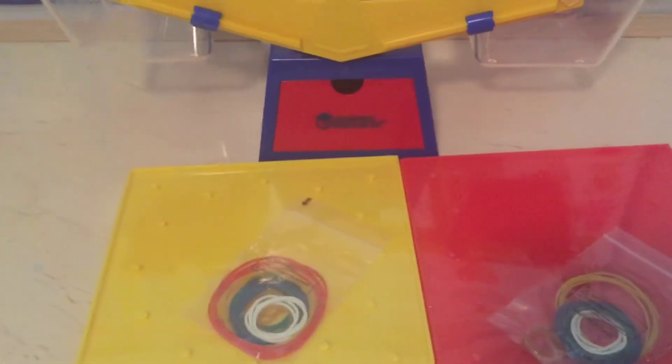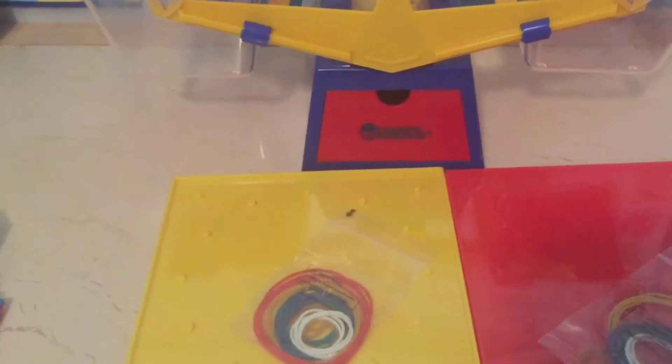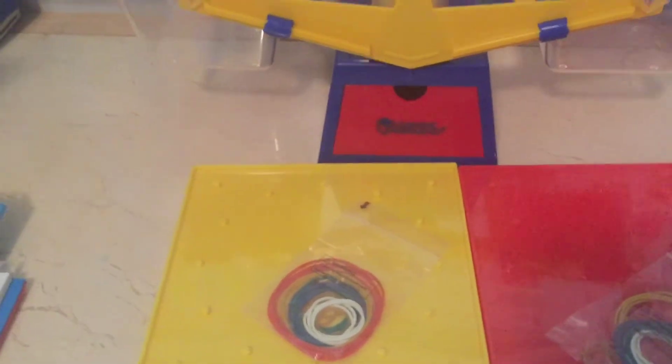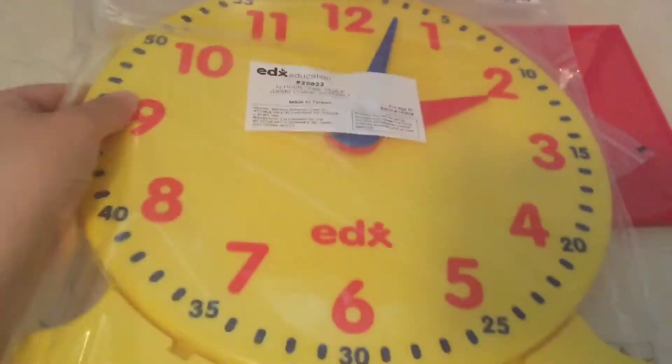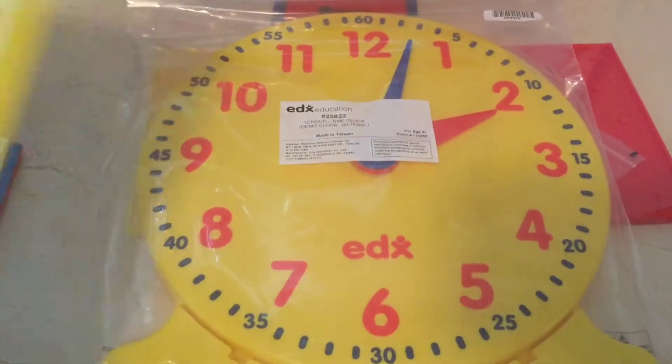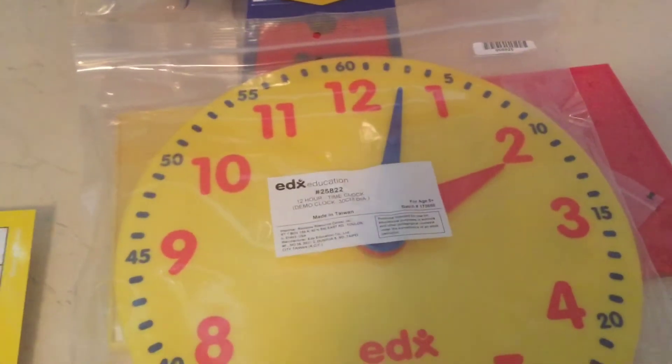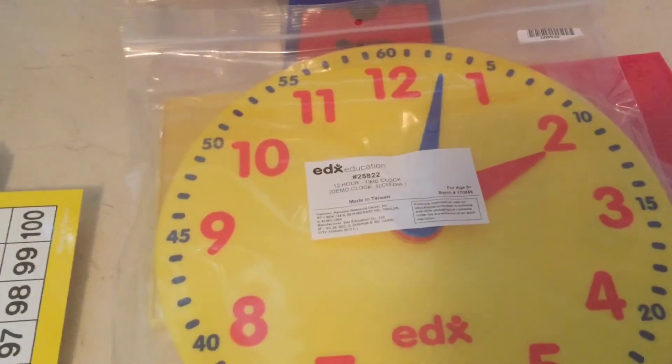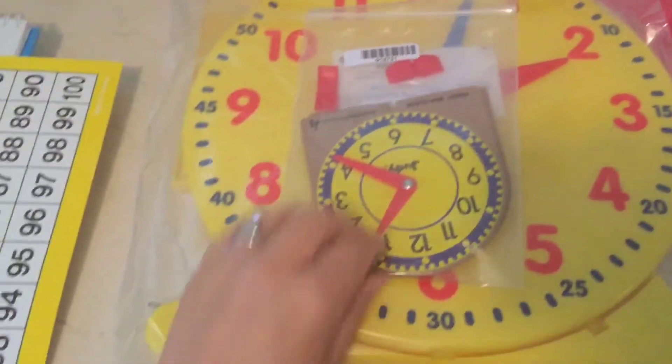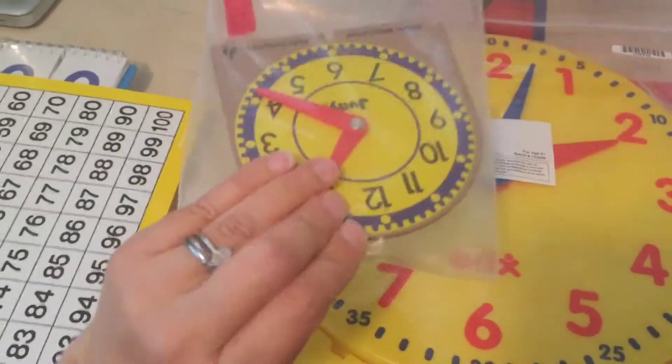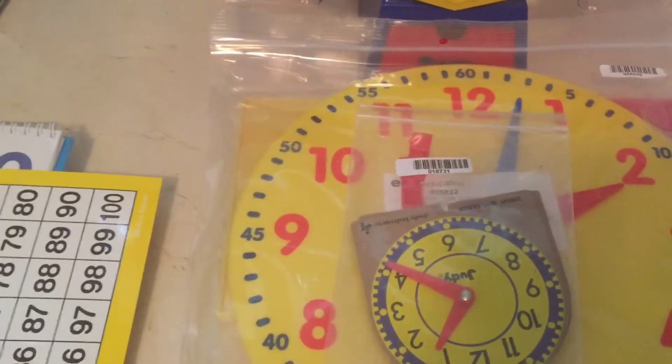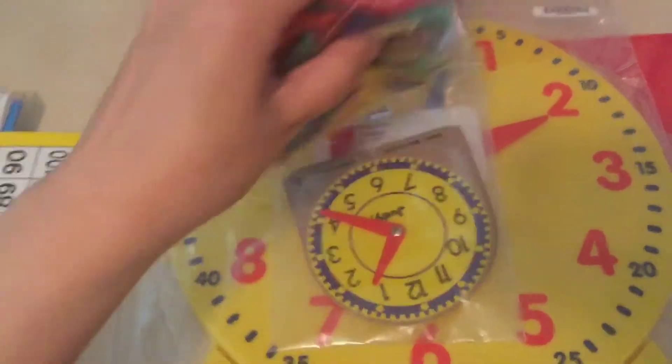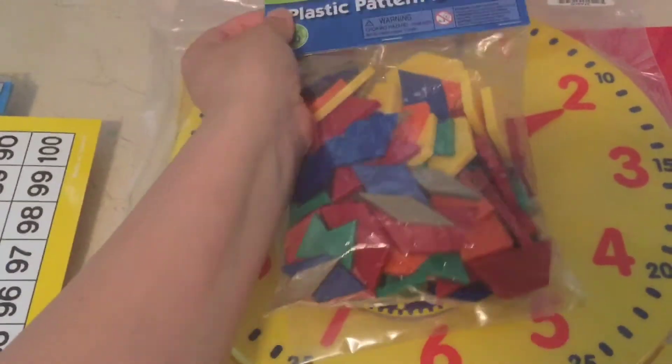You get two geo boards, a yellow and a red with these rubber bands. You get a large teacher demonstration clock. Sorry my kids are keeping busy watching Despicable Me right now. There's two Judy clocks.